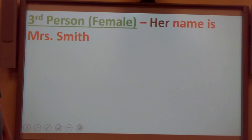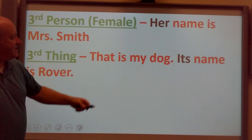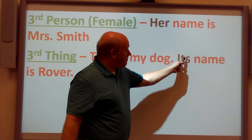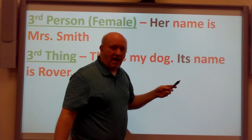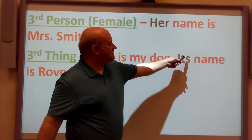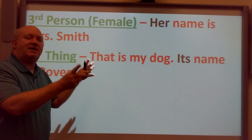Third person, female: 'Her name is Miss Smith.' We know 'Miss' is a feminine salutation, so we use the word 'her.' Third thing: 'That is my dog. Its name is Rover.' The word 'its' is possessive. Remember, when you have 'its' before a noun, there's no apostrophe-s, because apostrophe-s is a contraction for 'it is.' So 'it is name is Rover' doesn't sound right — no apostrophe. We'll cover that in another lesson.